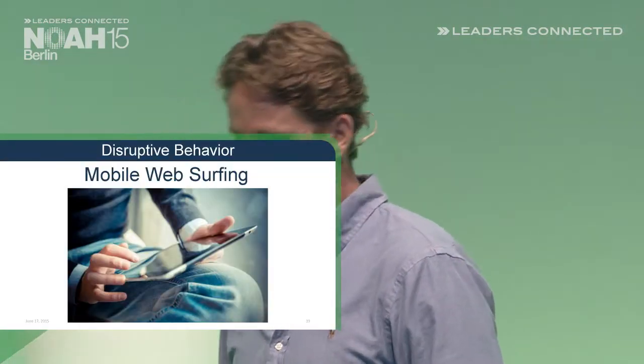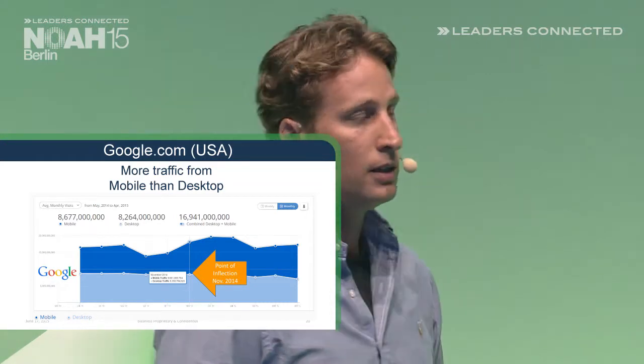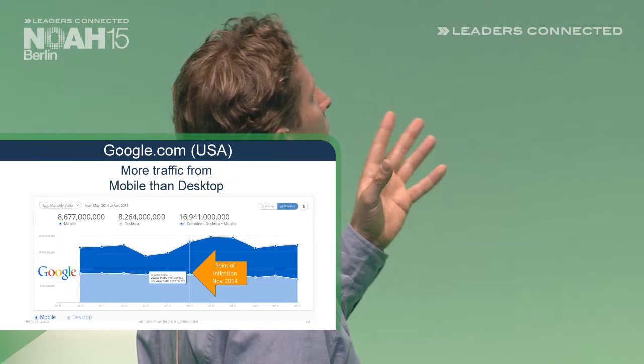The second topic I want to talk about today is mobile web surfing. Mobile web surfing is when a user takes their phone, opens the browser, and uses the browser to surf — it's not about using apps, it's about using the browser itself. The most interesting thing is this amazing chart showing the difference between desktop traffic and mobile web traffic on Google.com in the US. Where the orange arrow is, that is the point of inflection — in November 2013, more people were opening their browser on their phone and searching Google than searching Google on the desktop.